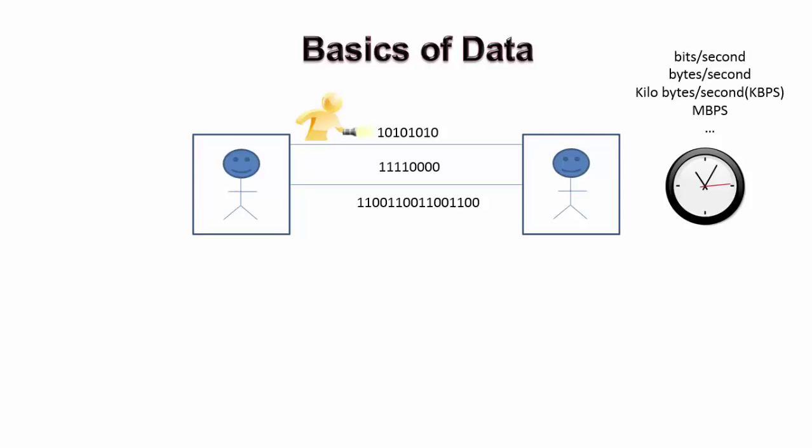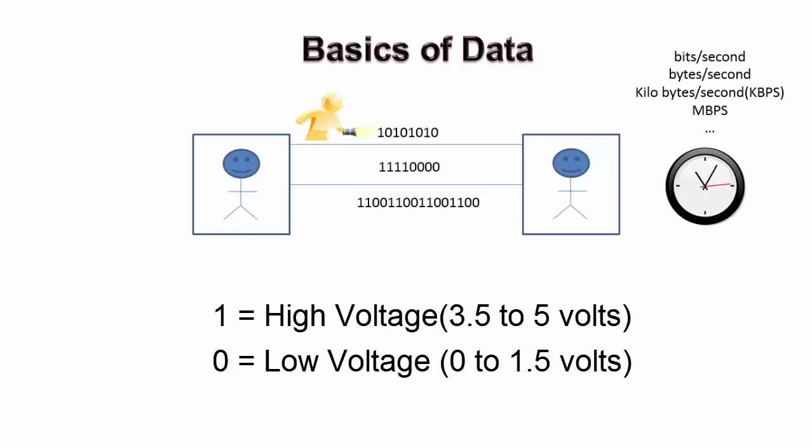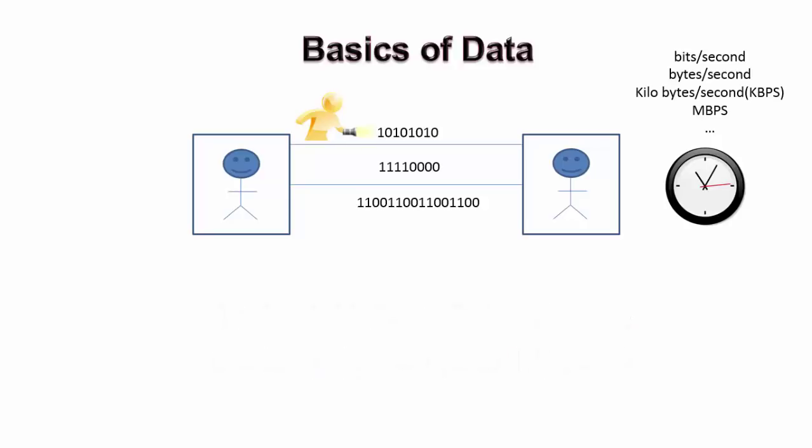The one here represents high voltage of about 3.5 to 5 volts. And the low voltage that is less than 1.5 volt means zero. Now let us understand what this received data mean.